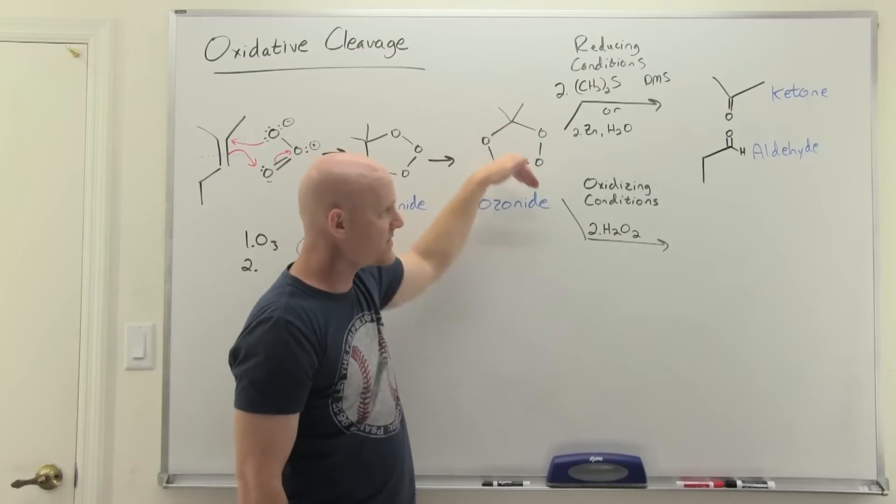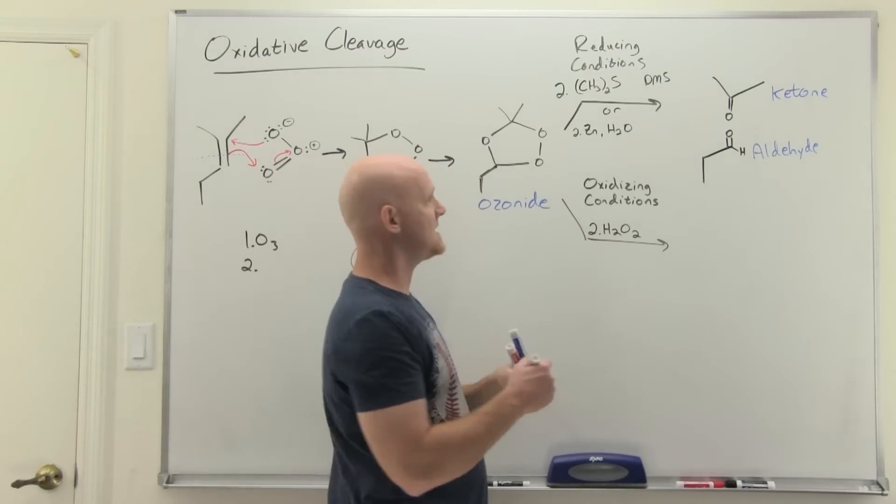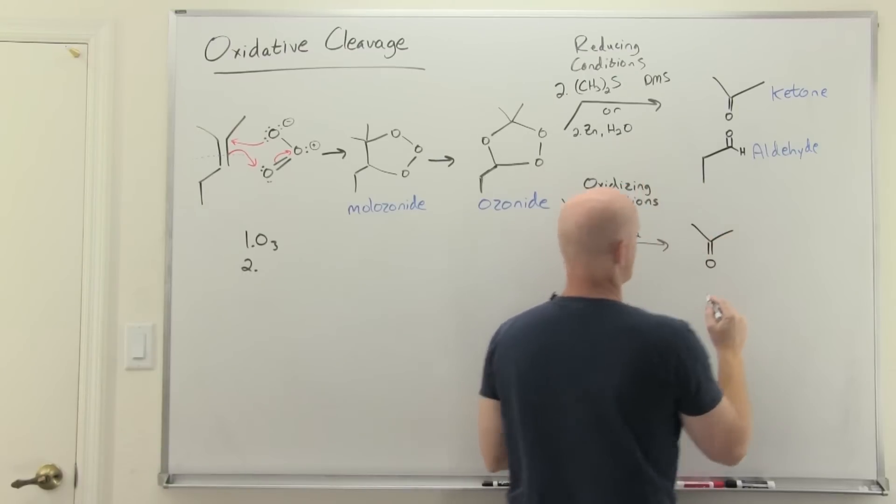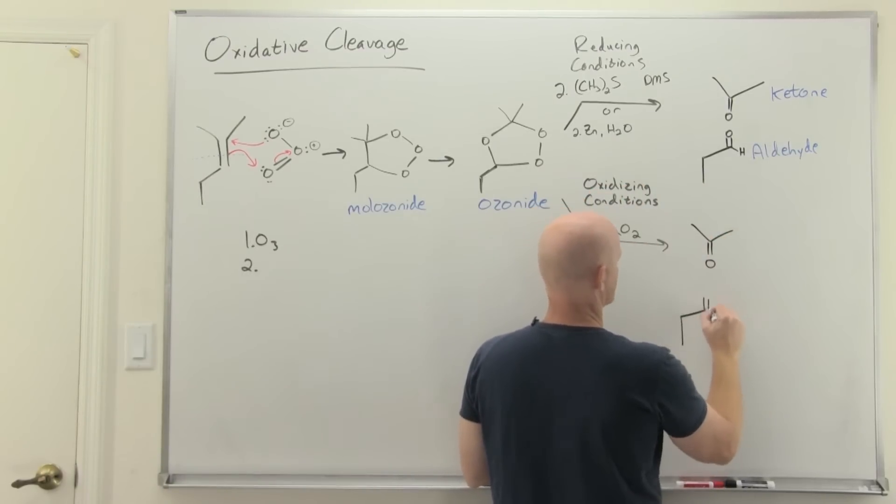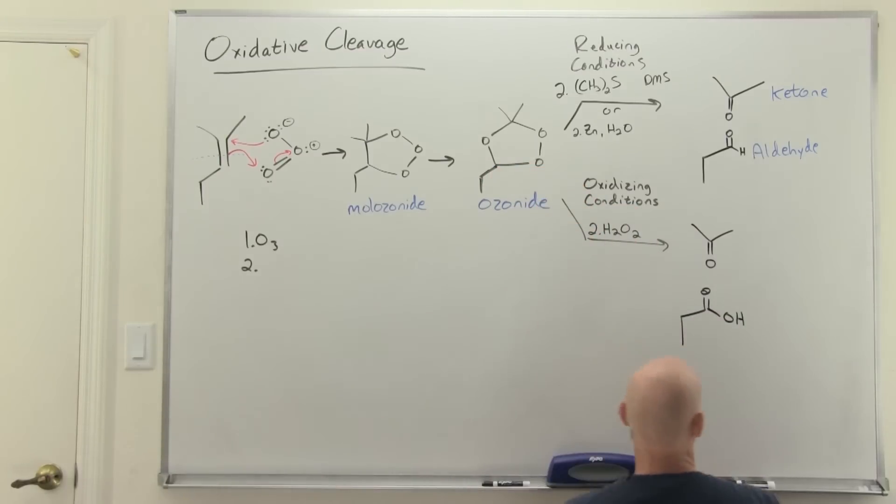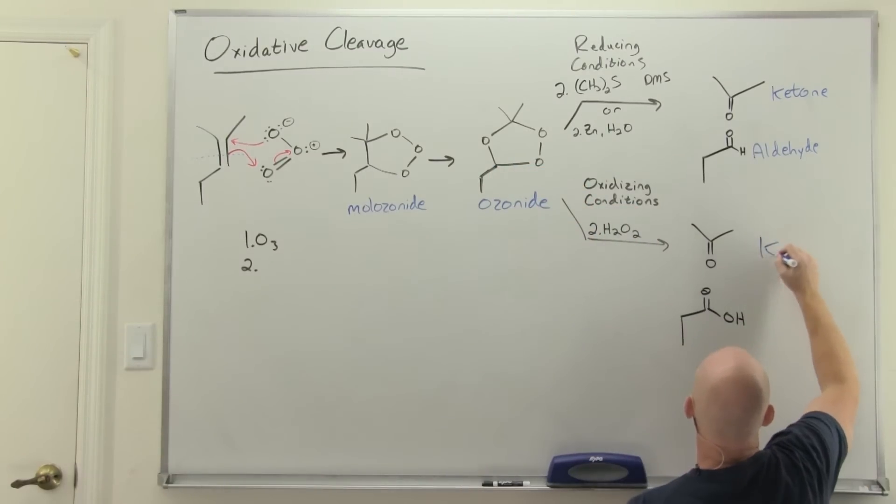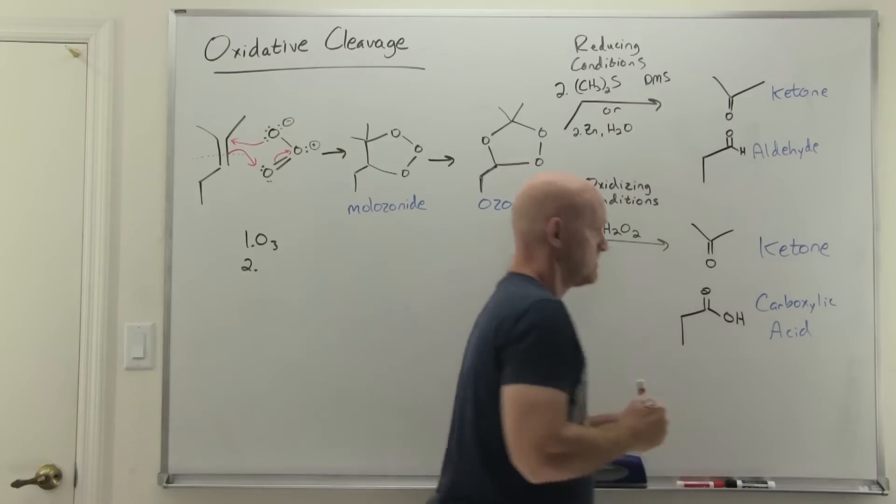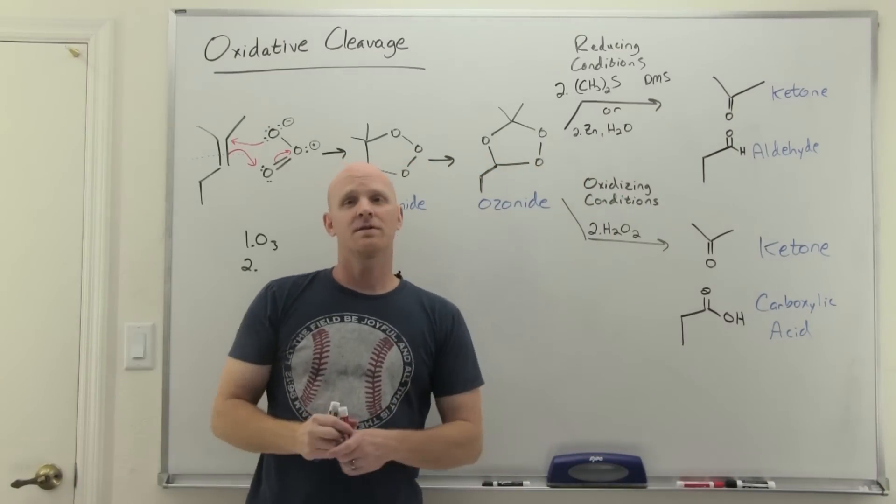But if we did this under oxidizing conditions instead, your ketone again is still a ketone, not going to change. But your aldehyde is going to get oxidized to a carboxylic acid instead. So again, your ketone is still a ketone, but instead of an aldehyde you get a carboxylic acid.